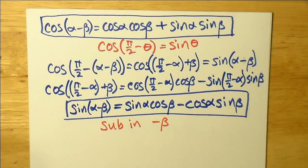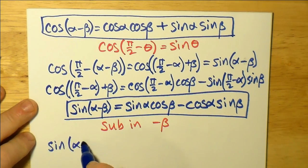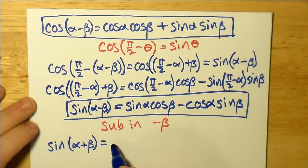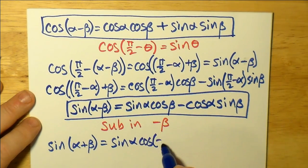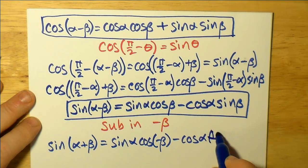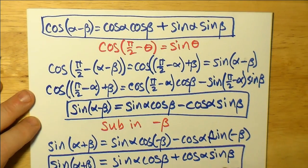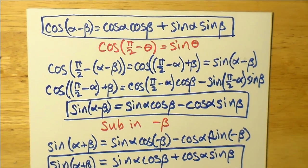If we substitute negative β in place of β, we get sin(α + β). That means we keep sin(α), but then we get cos(−β) — since cosine is an even function, that stays as cos(β). And cos(α)sin(−β) becomes −sin(β), meaning the minus sign in front of that term changes into a plus. So we have the fourth and final compound angle formula: sin(α + β).